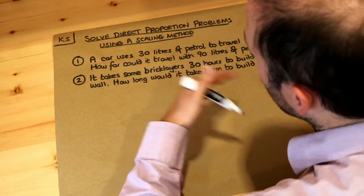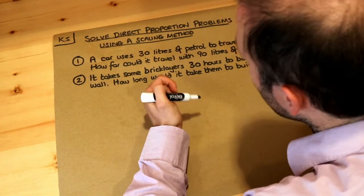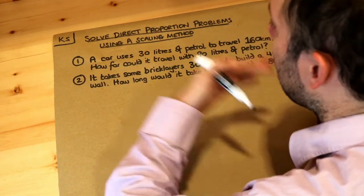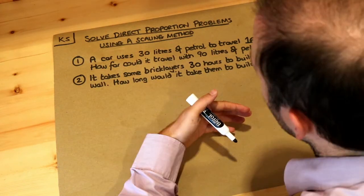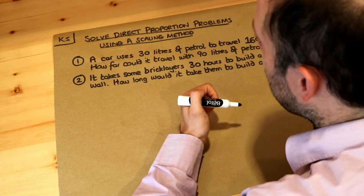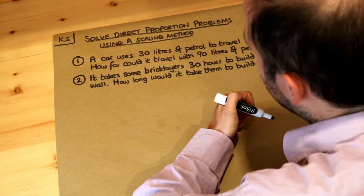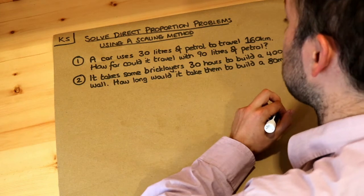For example, if you work twice the amount of hours at work you would get twice the amount of pay if you're being paid per hour. Or if you were doing a run, if you were to double your speed you would double the amount of distance you would cover if it was the same amount of time.